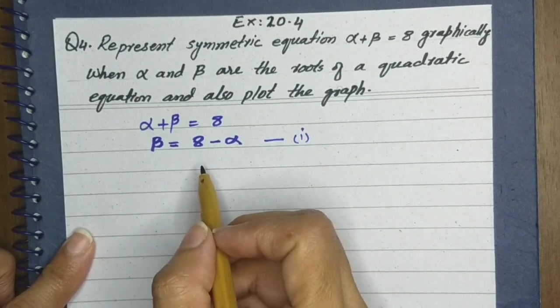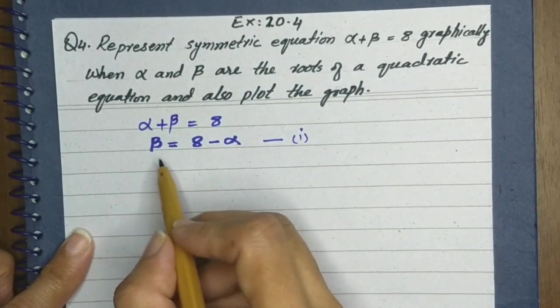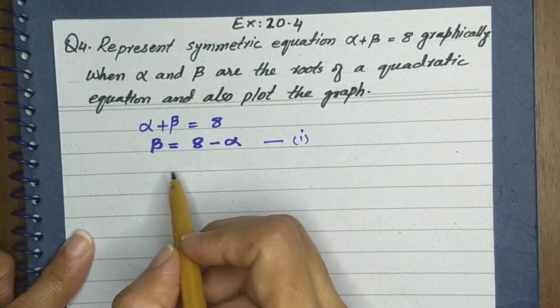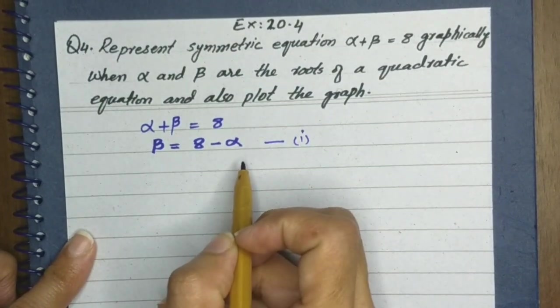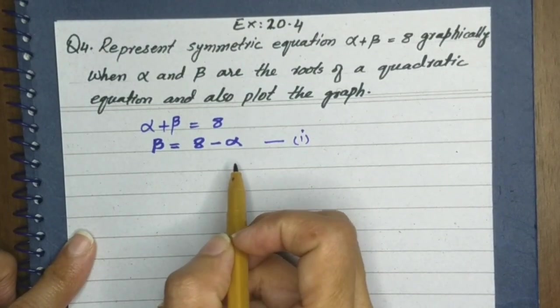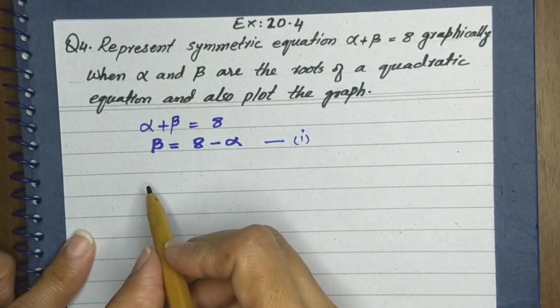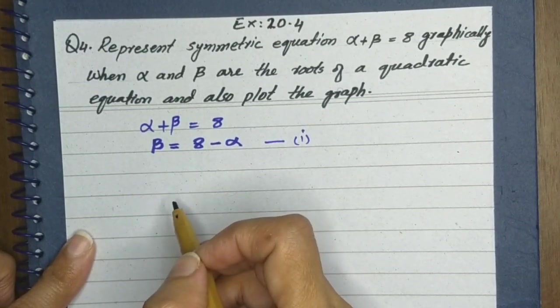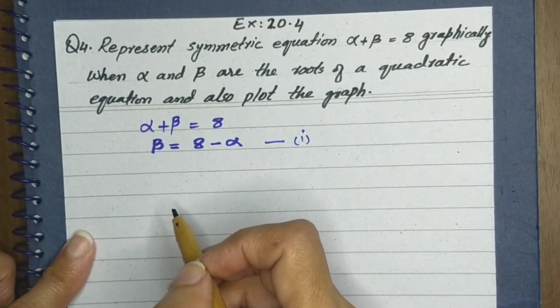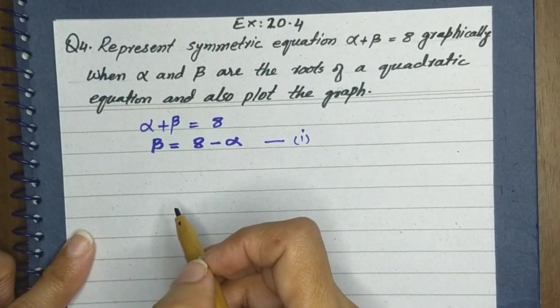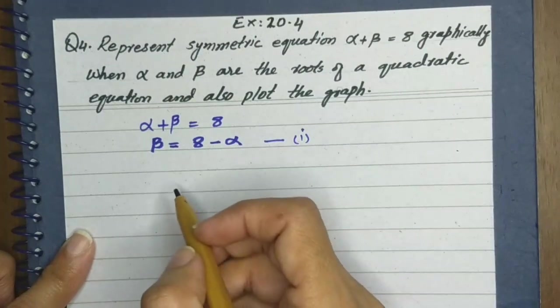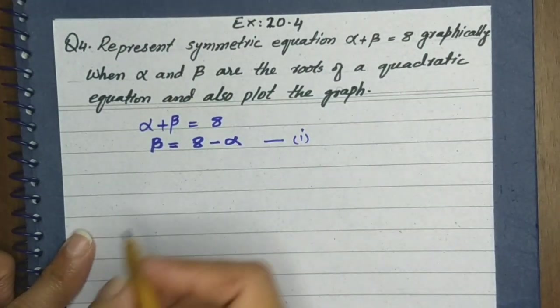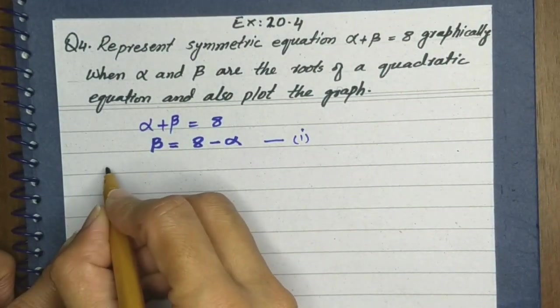We can give the value to alpha, or we can give it to beta as well. We are assigning values to alpha ourselves, and with those values we will find beta. Let's start.